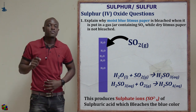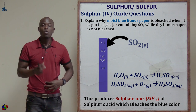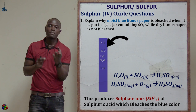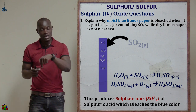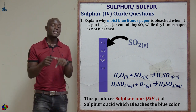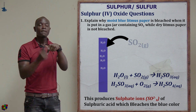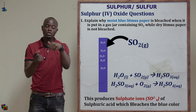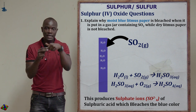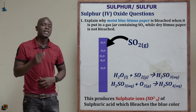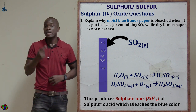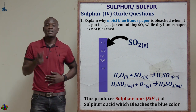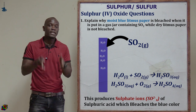The sulfur 4 oxide contained in the gas jar will dissolve in the water found on the litmus paper. Since the litmus paper is moist, it has some traces of water. The sulfur 4 oxide gas is going to react with this water in the litmus paper, and it is going to form an acidic medium — sulfuric acid.